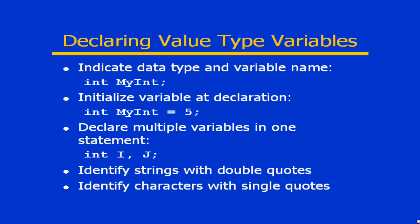You can declare multiple variables in one statement if you like — simply separate the different variables with a comma. So 'int i, j' creates two integer variables, i and j respectively.